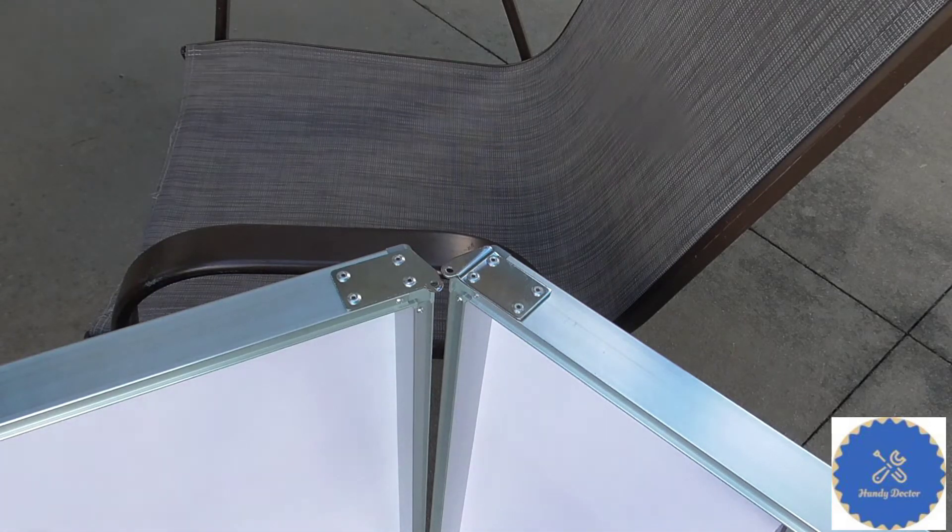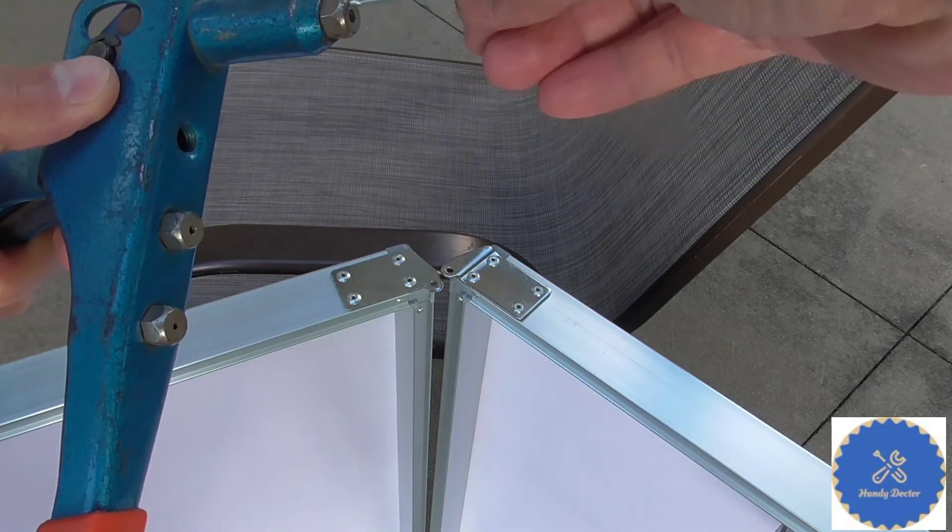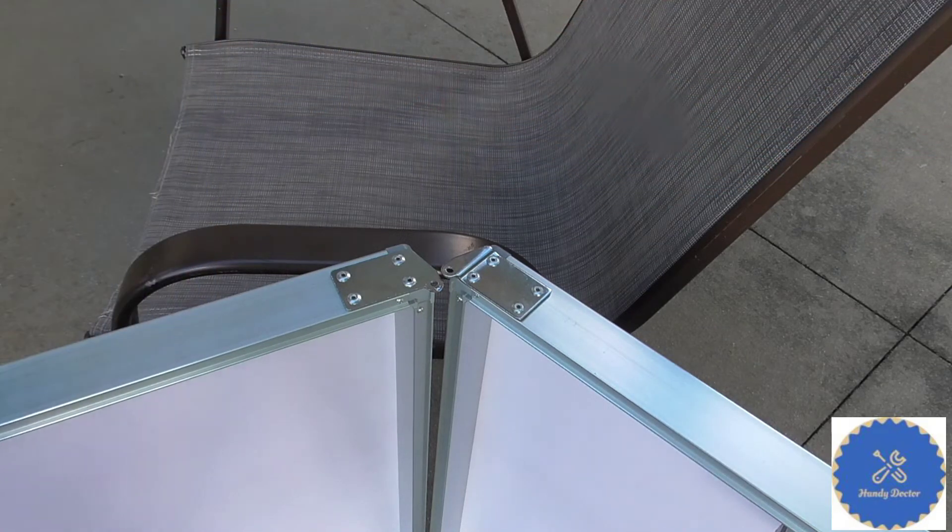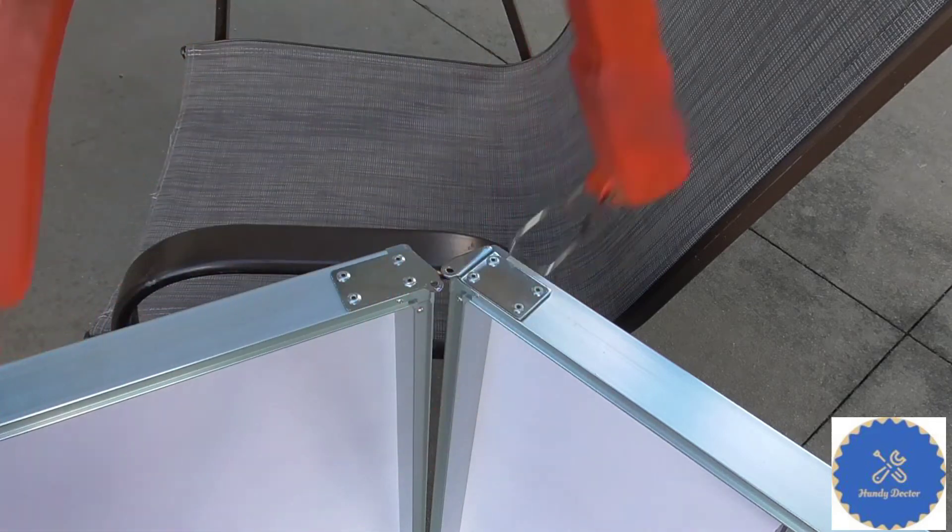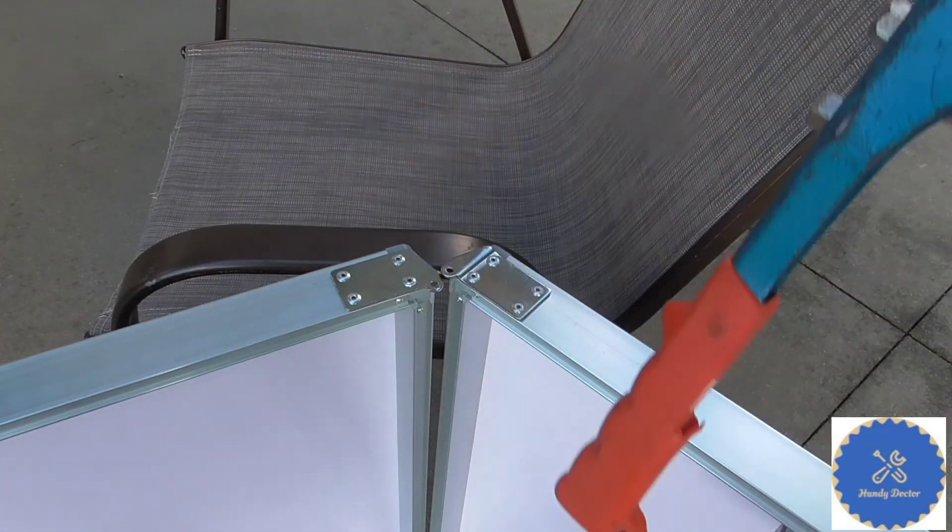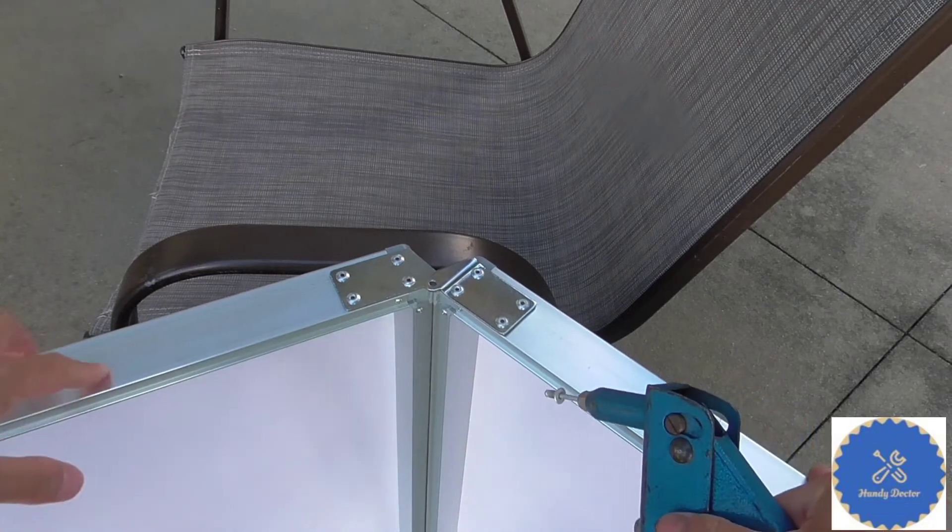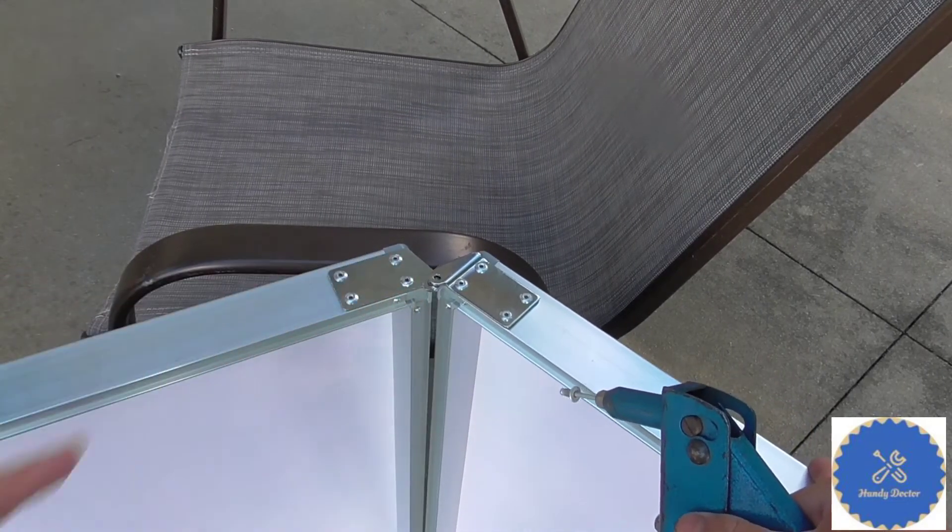Again, I am going to put it onto the rivet gun. Slide it in all the way. And I am going to align the two holes as good as possible.